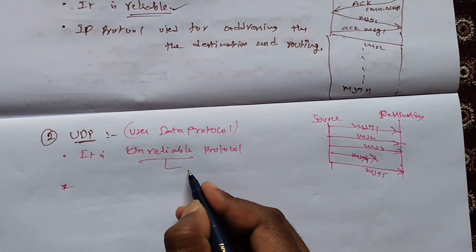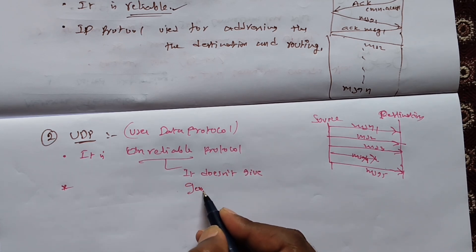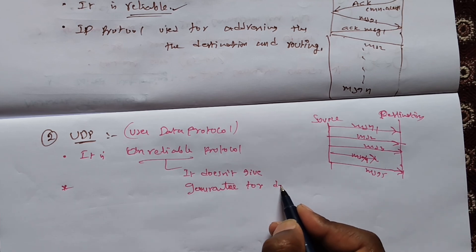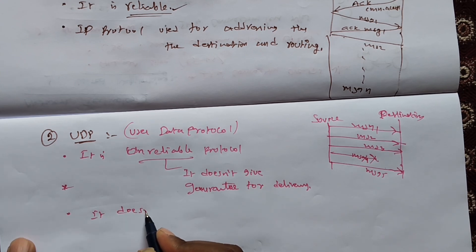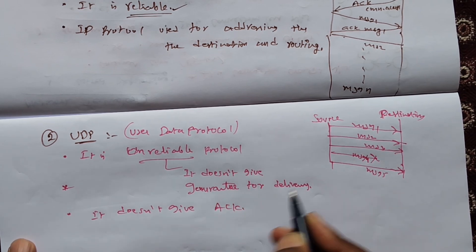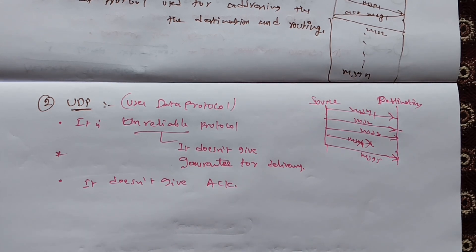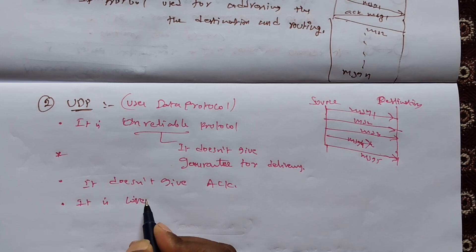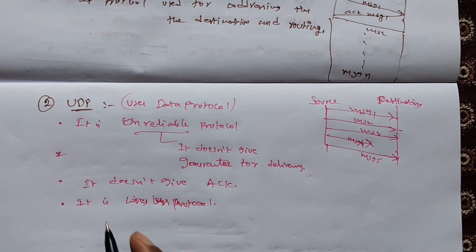Unreliable means it does not give guaranteed delivery. It does not give acknowledgement. If you have acknowledgement it means the message was delivered successfully, but here without acknowledgement there is no guarantee. It is also a connectionless protocol, meaning no connection is established between source and destination.